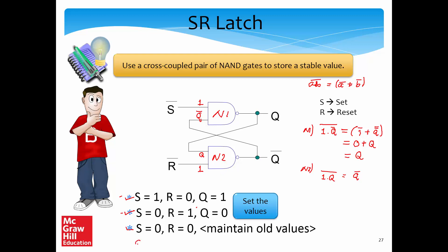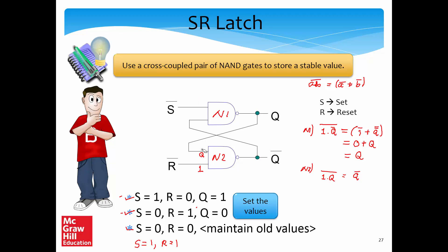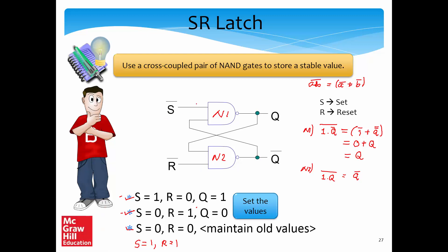Naturally, one will ask: what happens if we set S=1 and R=1? This is somewhat a tricky case and is a typical exam question. If S=1 and R=1, then S complement equals 0 and R complement equals 0. The moment 0 is one of the inputs of a NAND gate, the output equals 1. So both Q and Q complement will equal 1 — this is an invalid input. It produces something we don't want, so you cannot set and reset the latch at the same time.